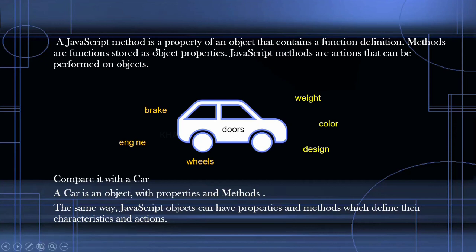In JavaScript, a method is also a property of an object but it will contain a function definition. Once we have a clear picture of what methods are and understand them theoretically, doing practical will be very easy.